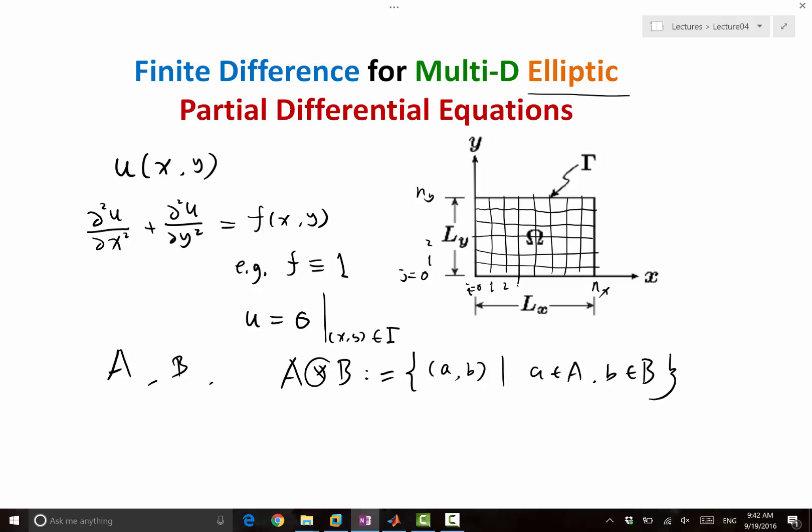So this is what's called a tensor product. All right, so in this case, basically the set A is all the grid points in the x dimension. The B is all the grid points in y dimension. So all possible combinations. Yes, basically Cartesian product.